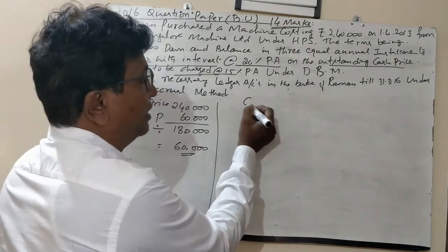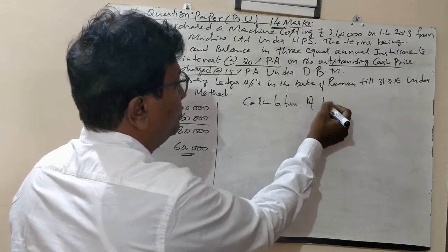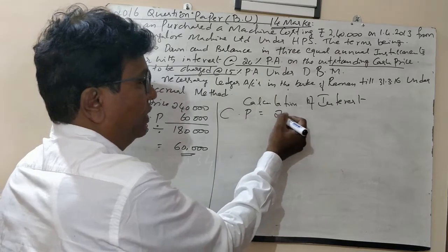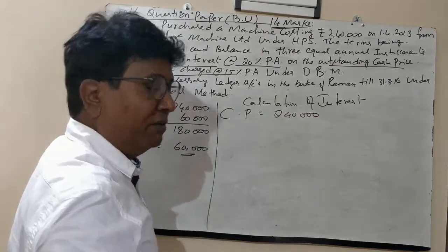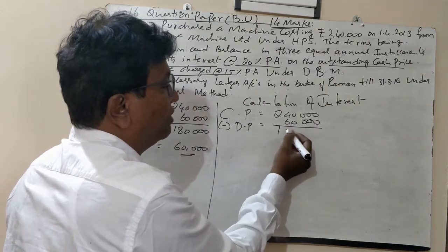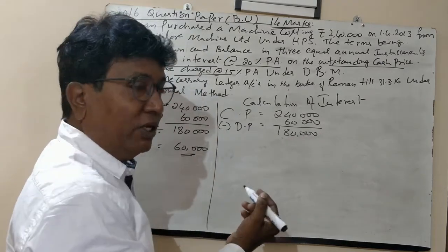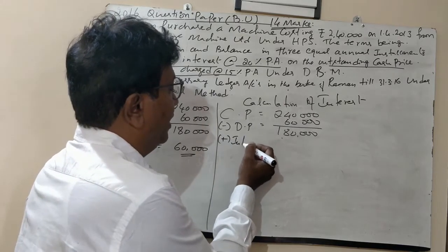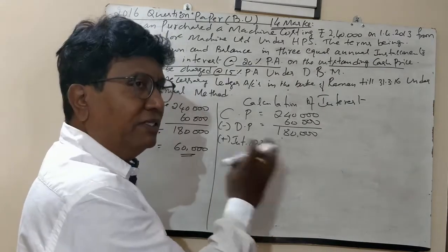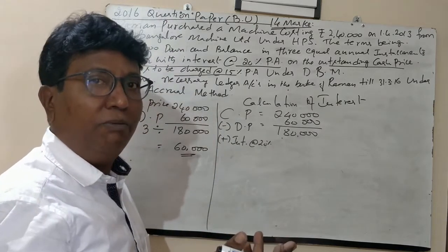Calculation of interest is very simple. Take the cash price first as ₹2,40,000. Deduct the down payment of ₹60,000, leaving ₹1,80,000. This is the first year amount which the vendor has given to you as a loan. We calculate interest at 20% on ₹1,80,000. 10% of ₹1,80,000 is ₹18,000, so 20% will be double that, which is ₹36,000.